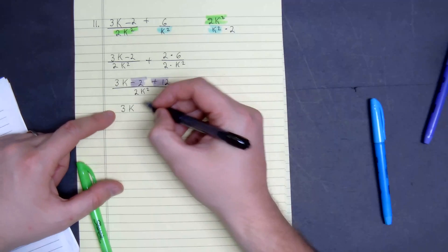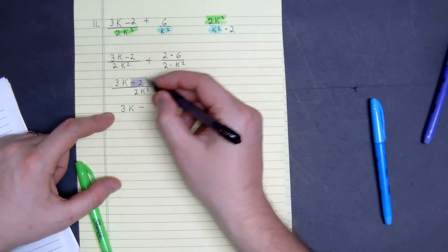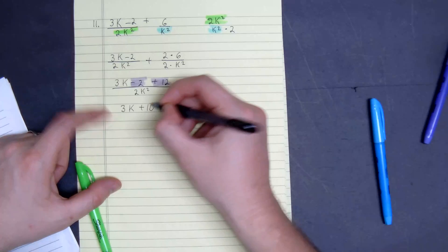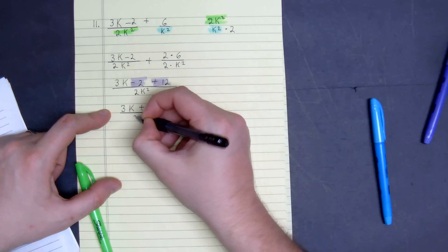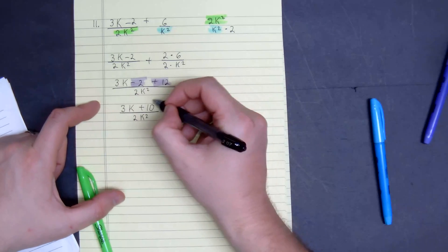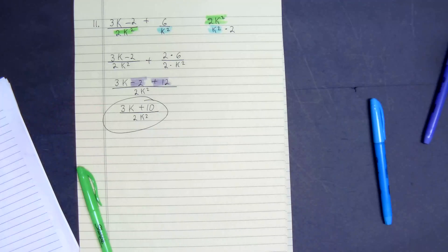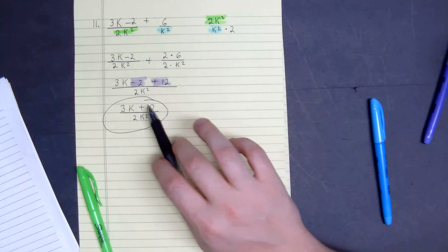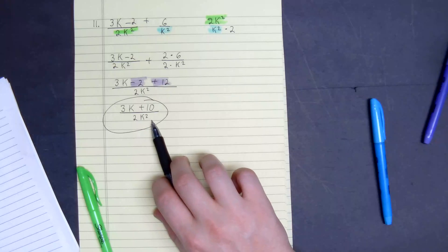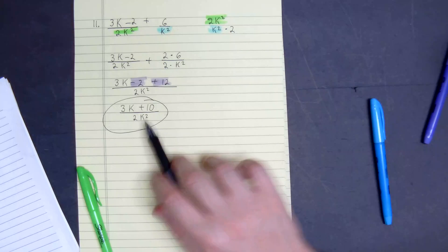So we get 3k plus 10 all over 2k squared. This would be simplified. But this problem, you could break the fraction apart, but this is most simplified in my opinion.